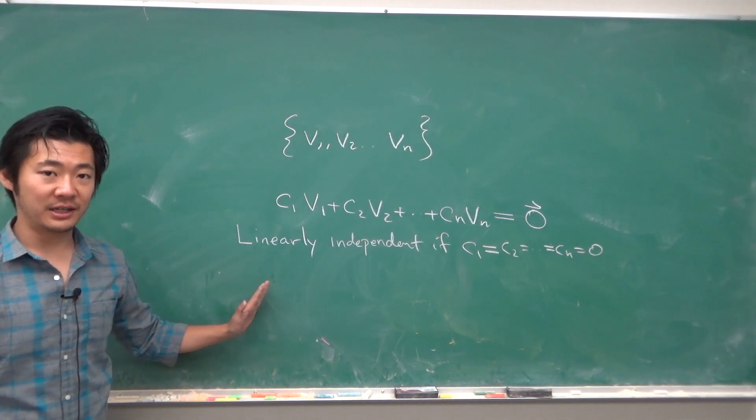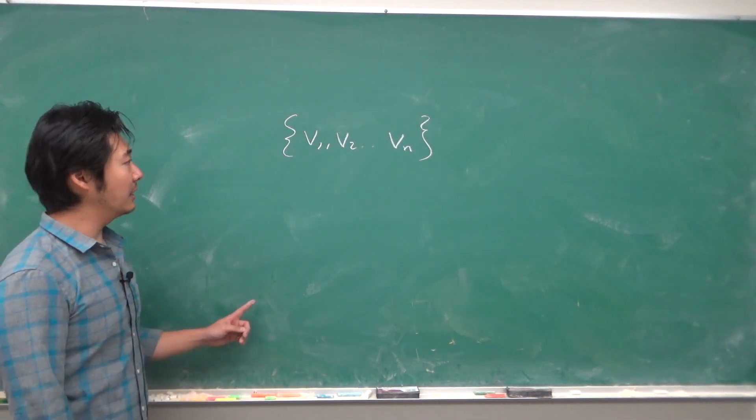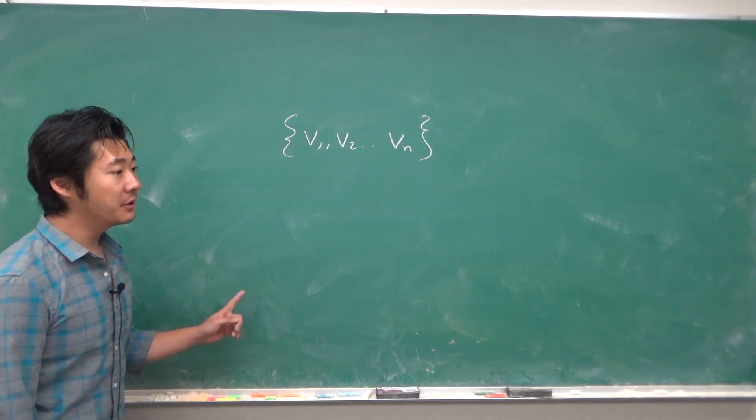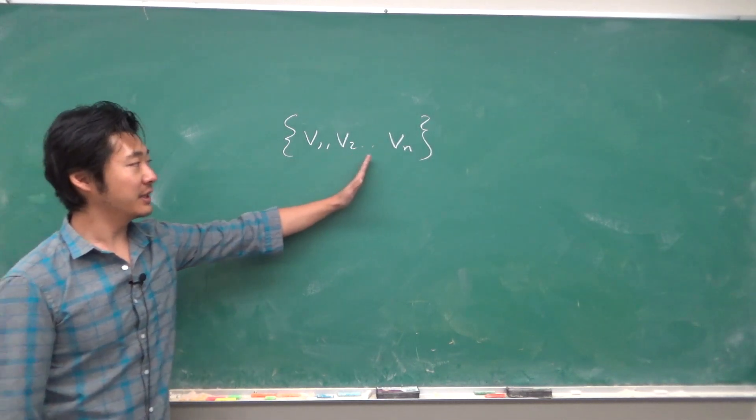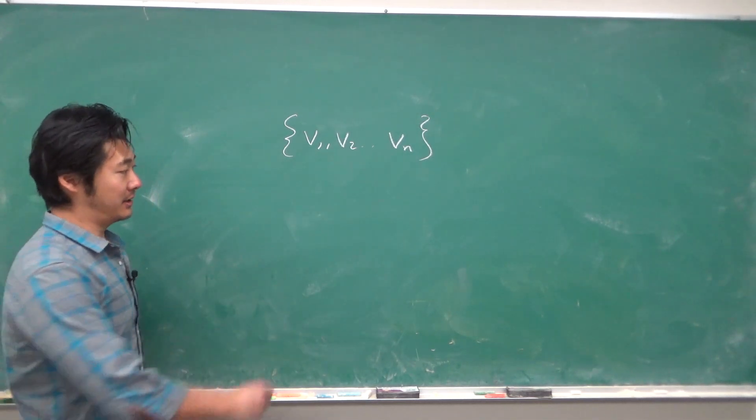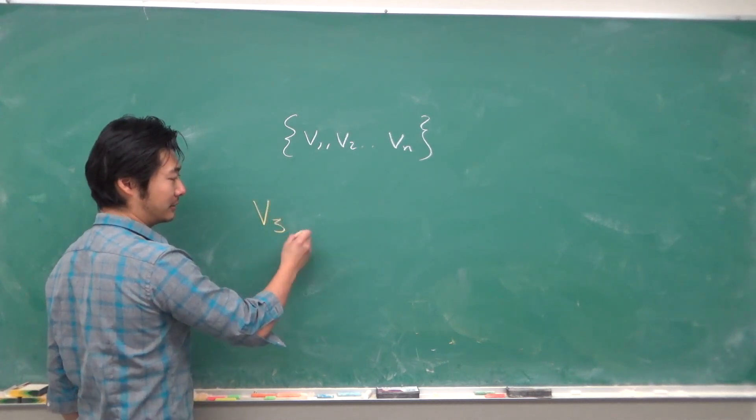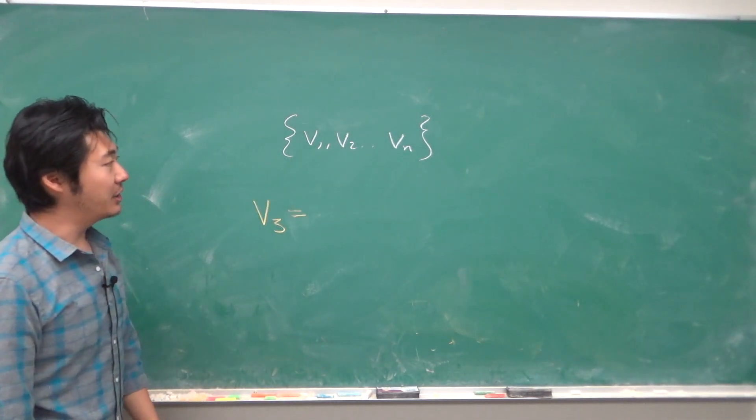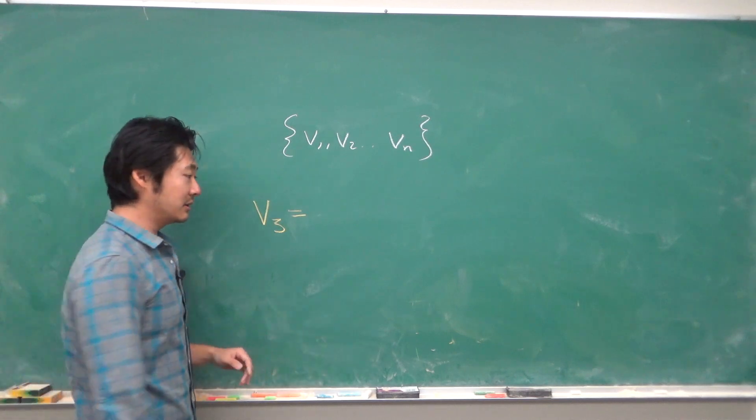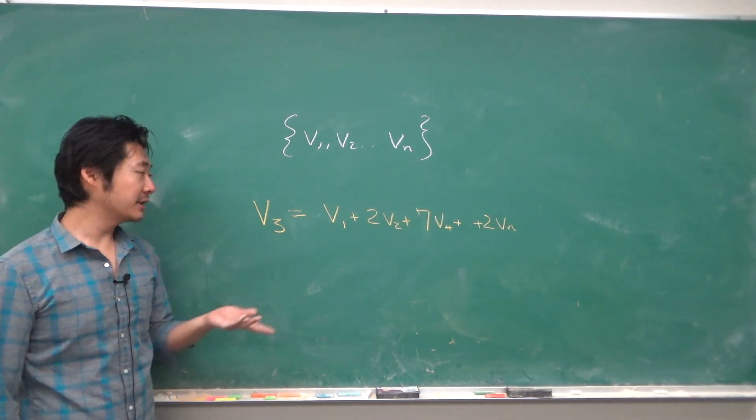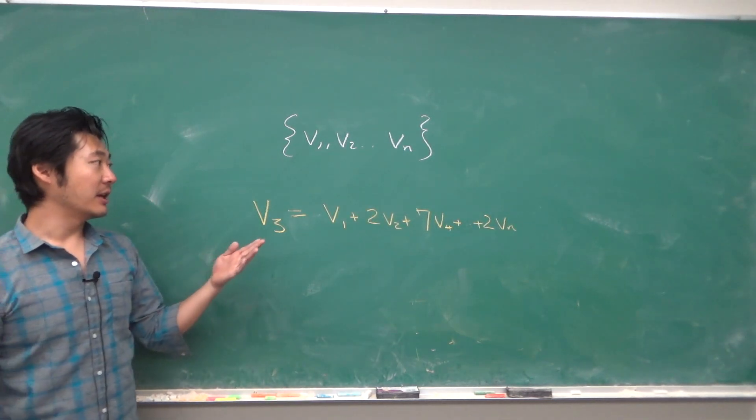Heuristically, you can think of this as: if you can write one of the vectors in this set, let's say v3, as a linear combination of the remaining vectors, just something like this, then they are a dependent set.